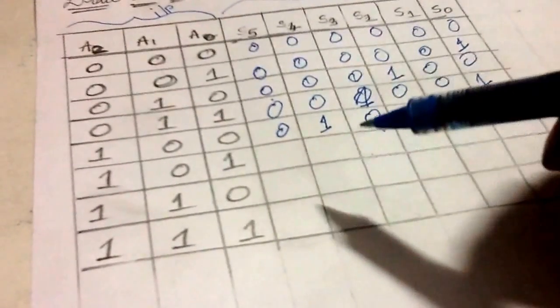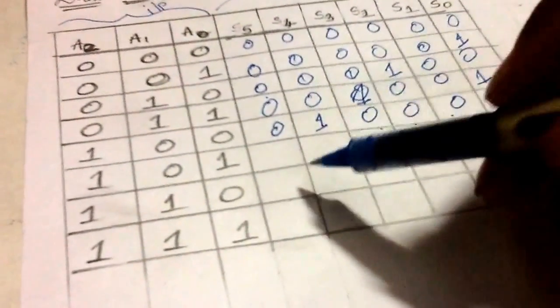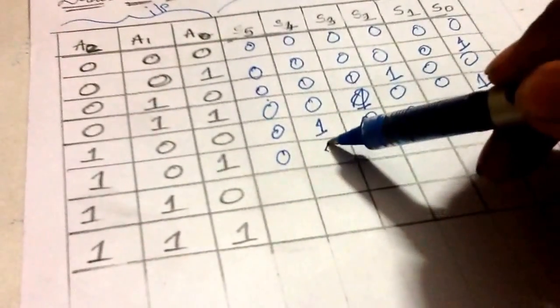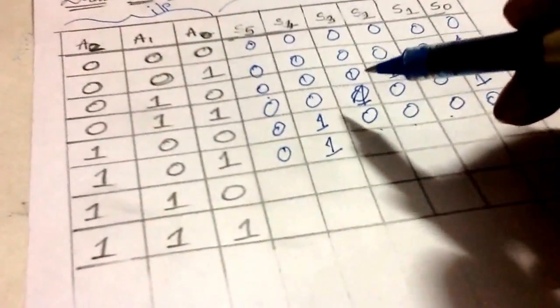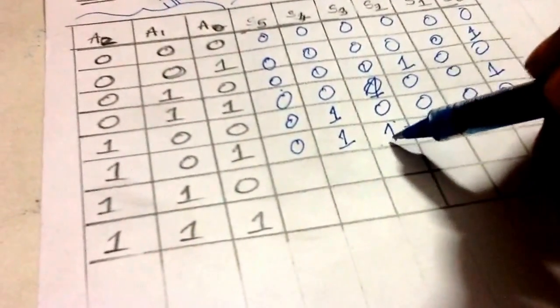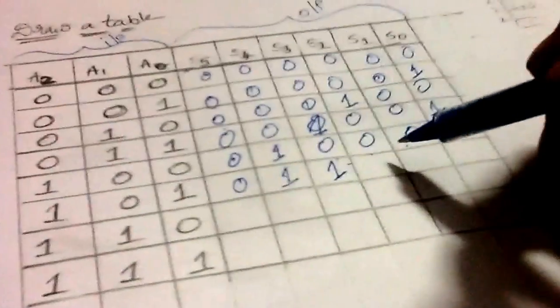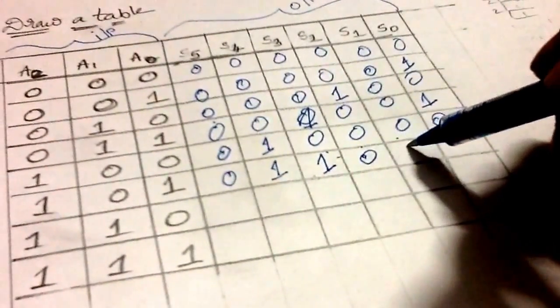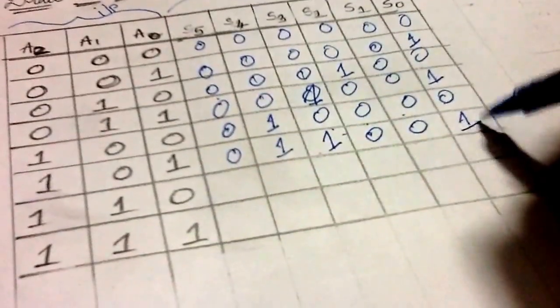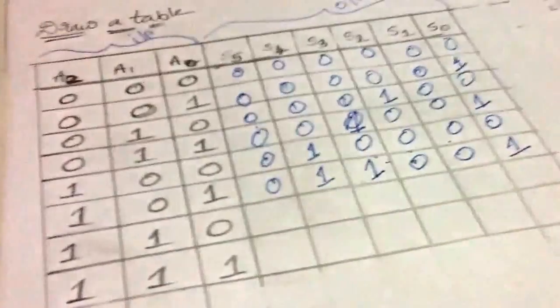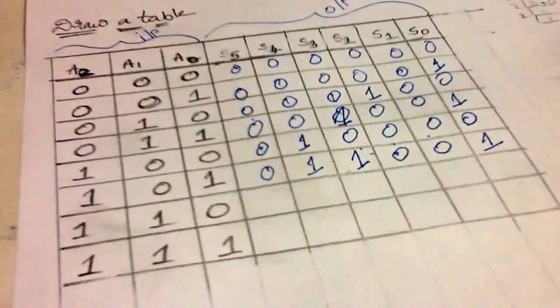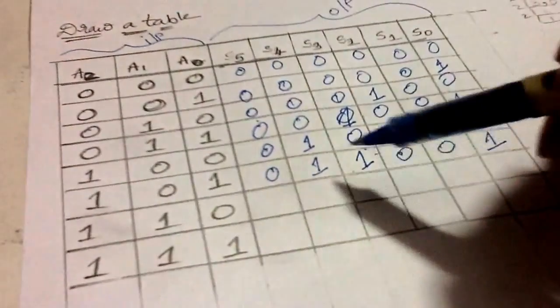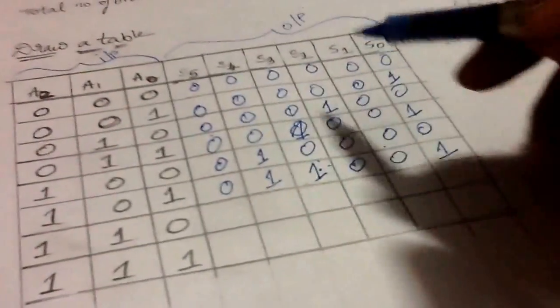It is 16. Coming to 5, it has to be 25. It is 16 plus 8 plus 1. 2 power 0, 2 power 1, 2 power 2, 2 power 3, 2 power 4. 16 plus 8 is 24, 24 plus 1 is 25.